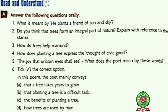Question 6: Pick the correct option. In this poem, the poet mainly conveys: a) a tree takes years to grow, b) that planting a tree is a difficult task, c) the benefits of planting a tree, or d) how trees are used by man.